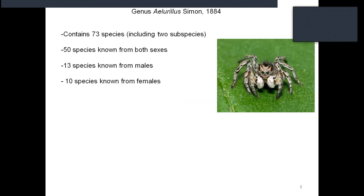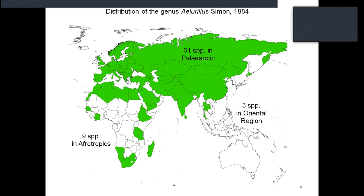Genus Allurellus contains 73 species including two subspecies; 50 species are known from both sexes, 13 from males only, and 10 from females only. Allurellus species are known only from the Old World. They are distributed mostly in the Palearctic with 41 species; nine species occur in the Afrotropics, and only three species in the Oriental region.